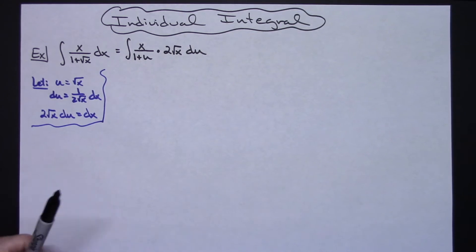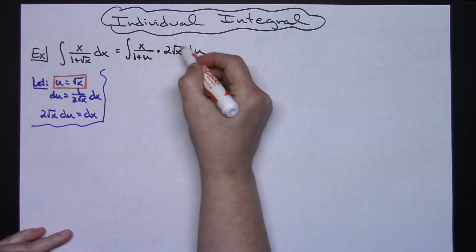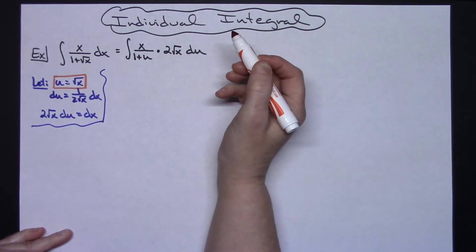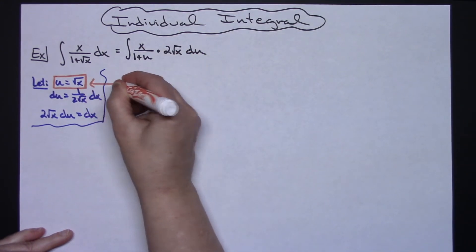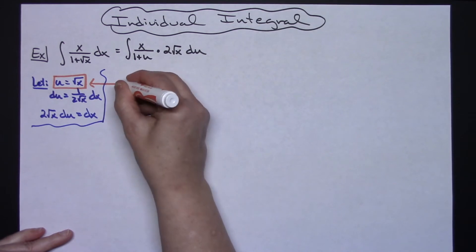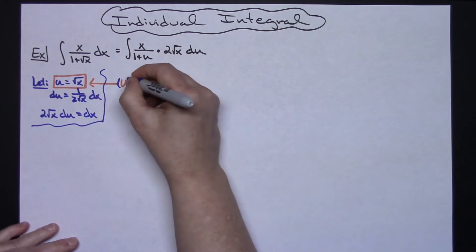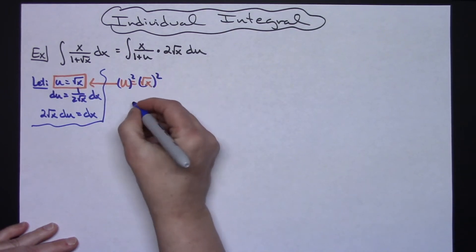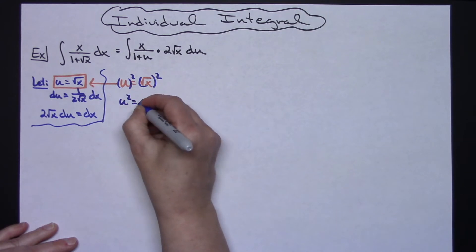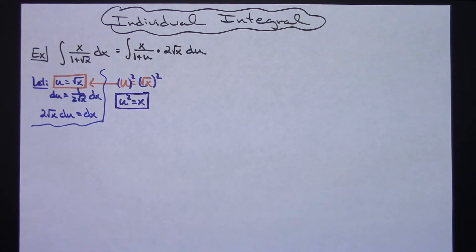Since u equals the square root of x, if we solve that equation for x by squaring both sides, the square root and the square cancel, leaving u squared equals x. That gives us a way to substitute out the remaining x as well.